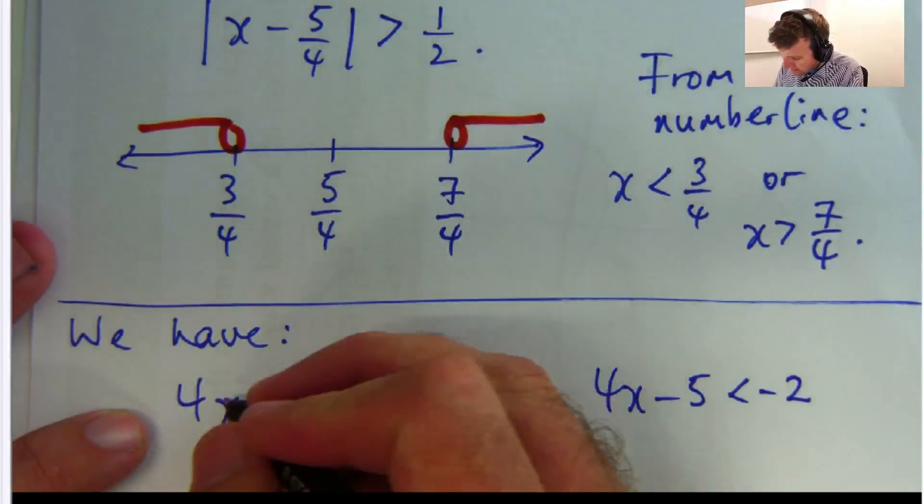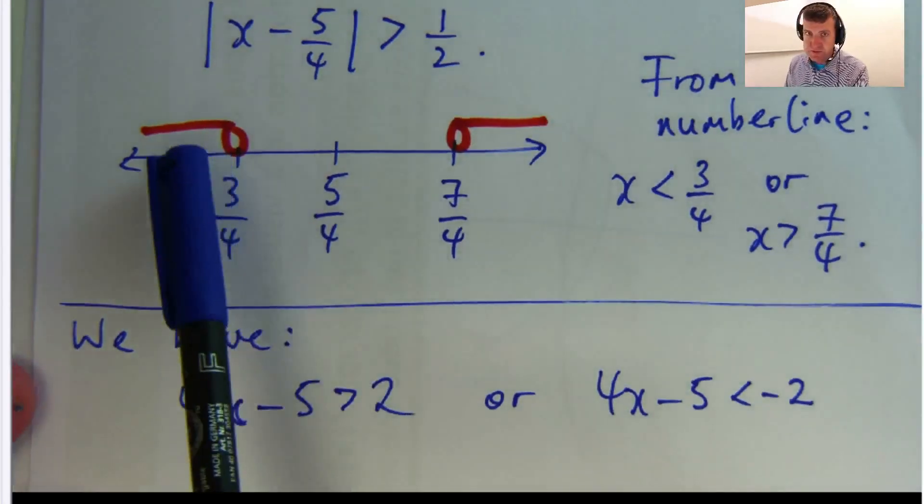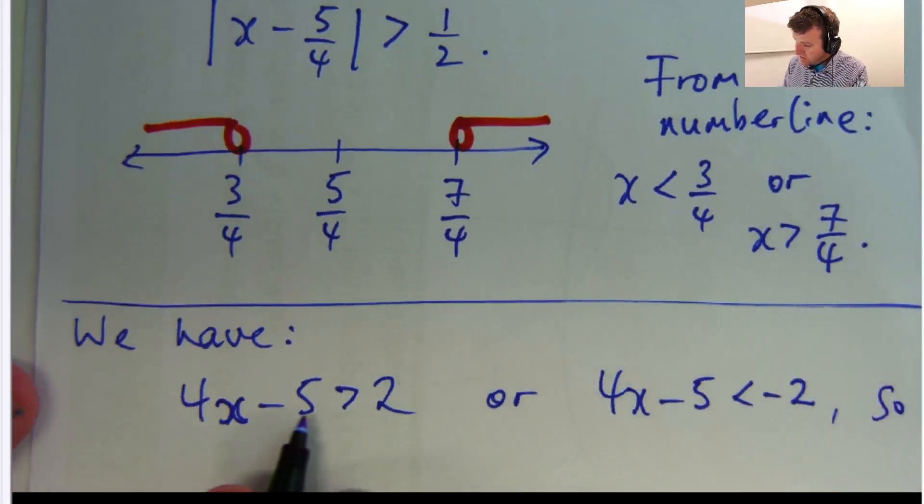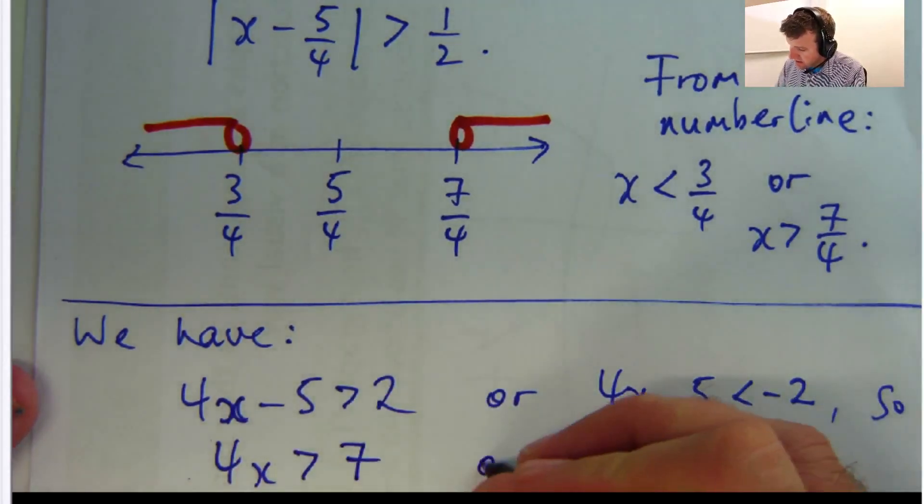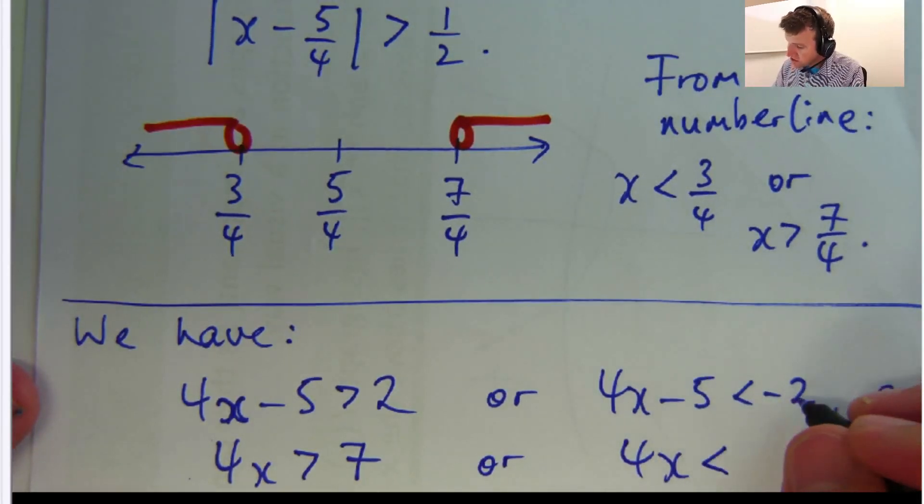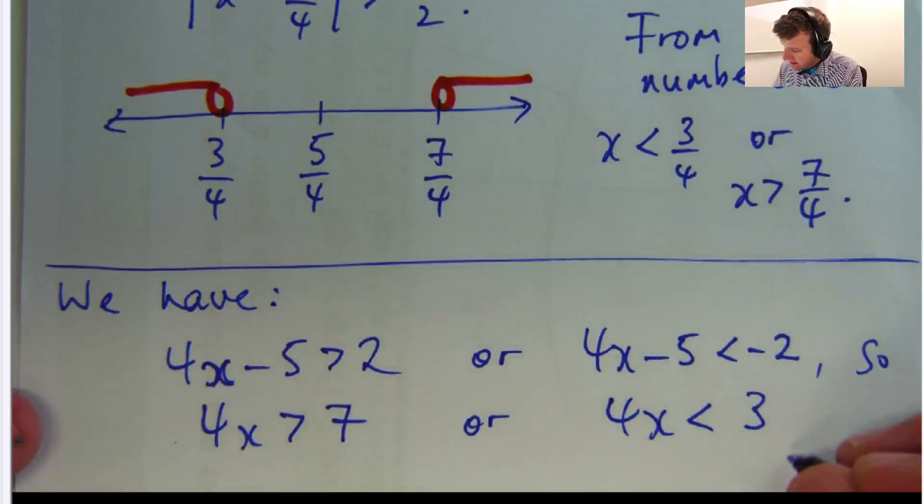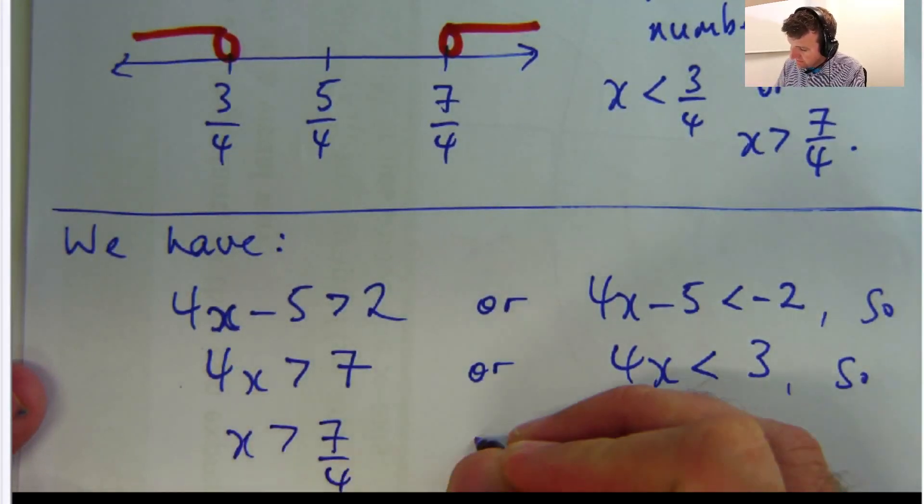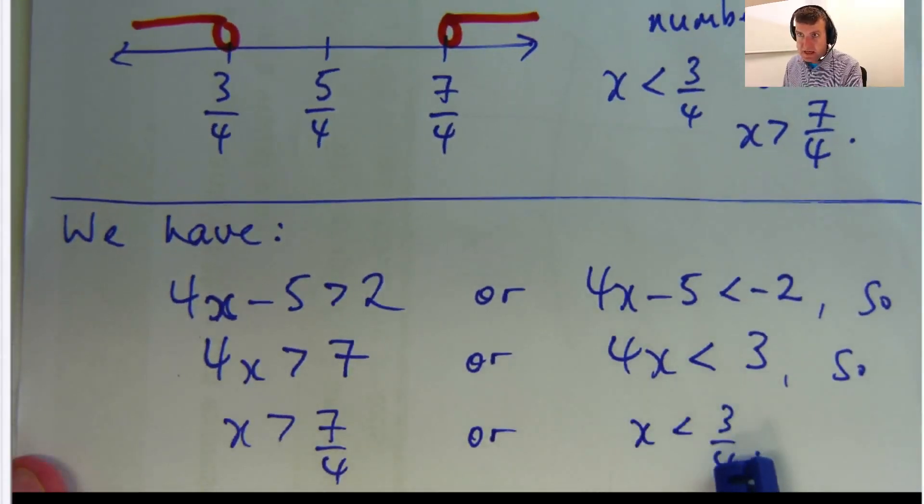So you solve these two inequalities separately, and then that will give you two intervals, and they should be the same intervals that we got up here. Okay, so let's try that. So if I add 5 to both sides, I get 4x is greater than 7. So let's add 5 to both sides here, 4x is less than 3. So now we just divide everything by positive 4, and we get that. And that is the same as what we've got up here.